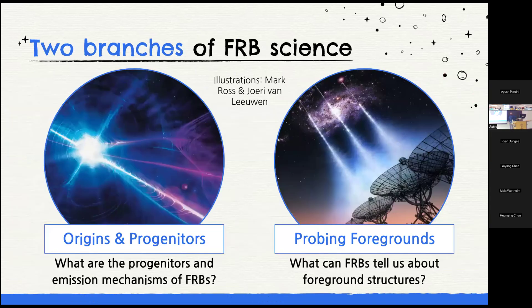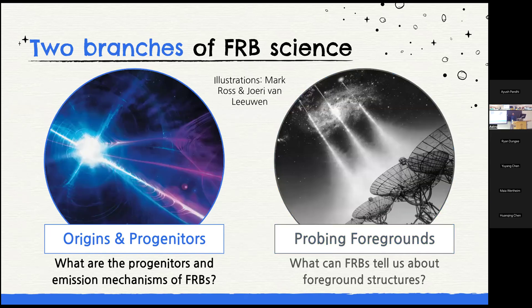This leads to two main branches of FRB science. One group is interested in the origins and progenitors of FRBs — what objects create them and what emission mechanisms are involved. Another group doesn't care where they come from; they use FRBs to study the universe itself, answering big questions like what is the baryon distribution in the universe — how many baryons are in the IGM versus in galaxies. I'm part of both groups, but this talk will mostly focus on progenitors, with the latter touched on in the last five minutes.